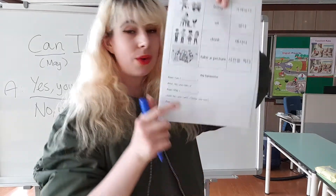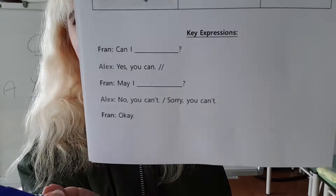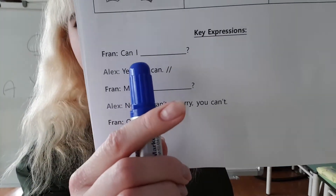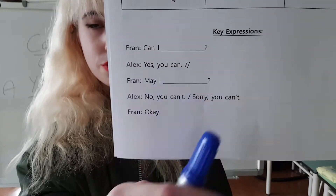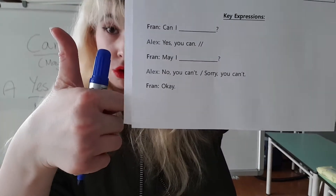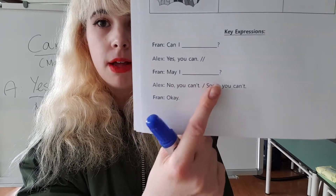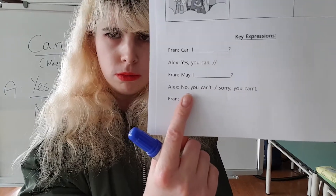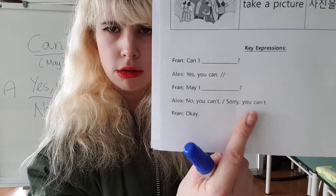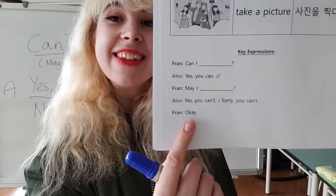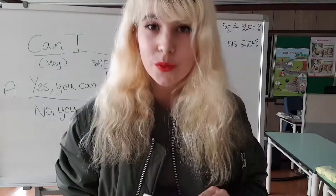And here we have our sentence. What does the first sentence say? Can I blah blah blah? Yes, you can. May I blah blah blah? No, you can't. Sorry, you can't. So these are our words and sentences for this topic, which is all about 'can.'